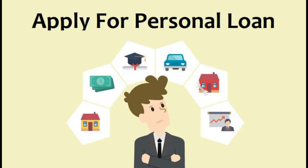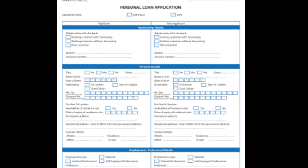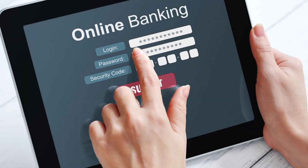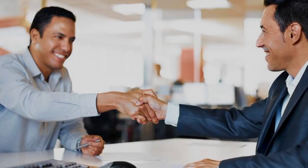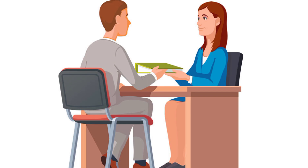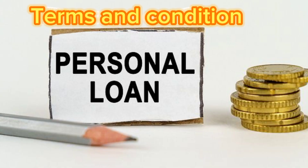Now we will see how to apply for a personal bank loan. You have to fill the loan application form and hand it over to the branch with the required documentation. You can apply for personal loans online if you are already registered for the relevant bank's digital online banking facility. You can also visit the nearest branch and discuss your requirement with an officer, who will guide you through the loan application process.